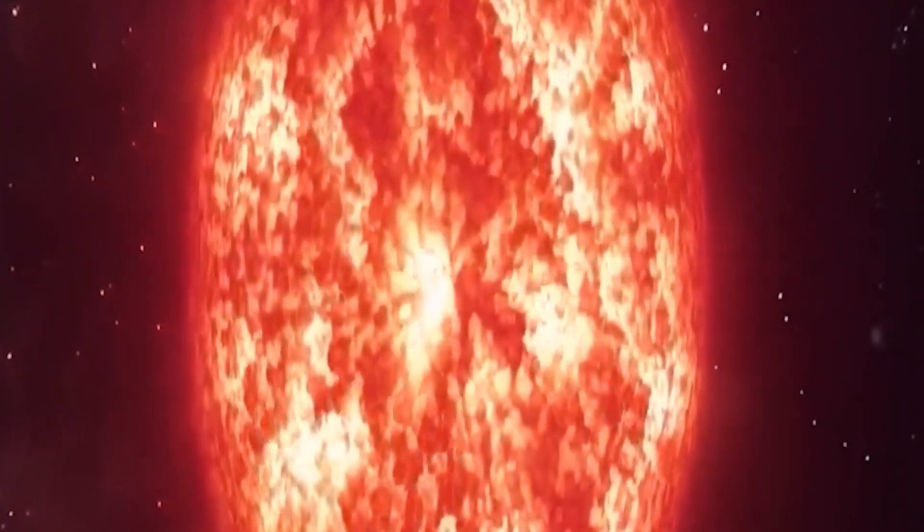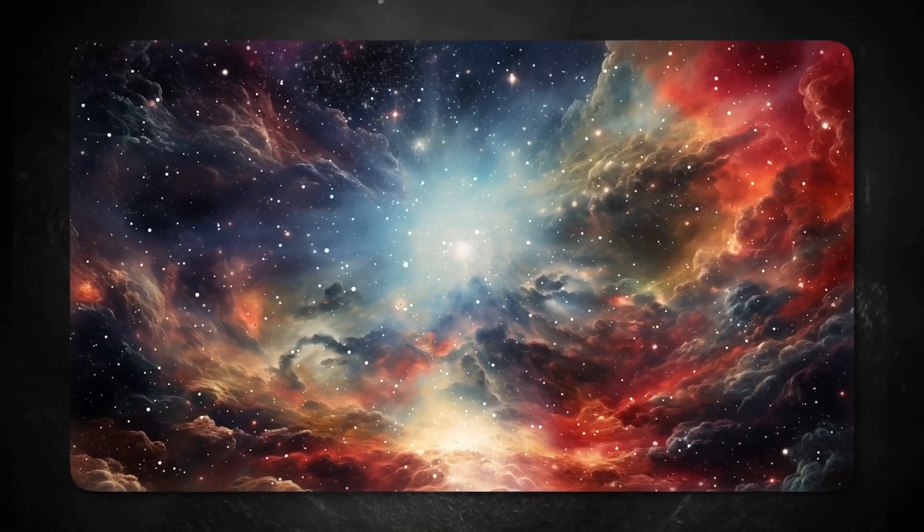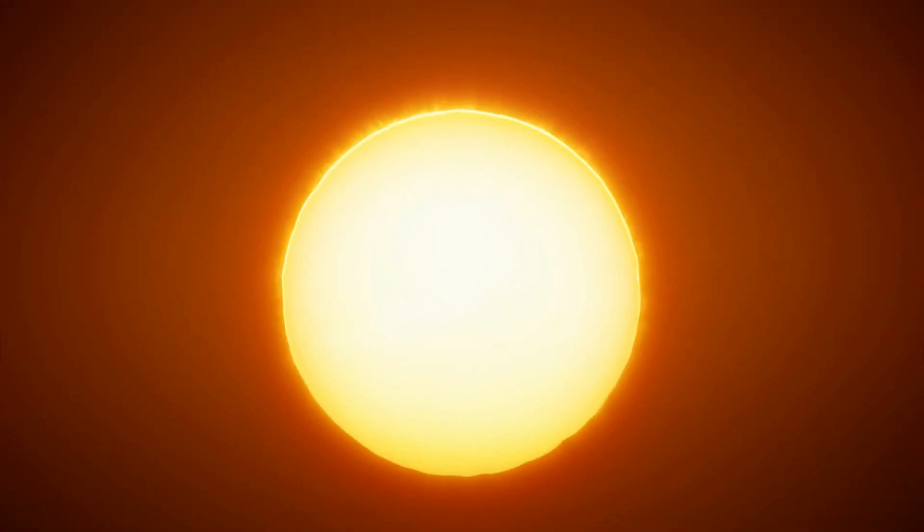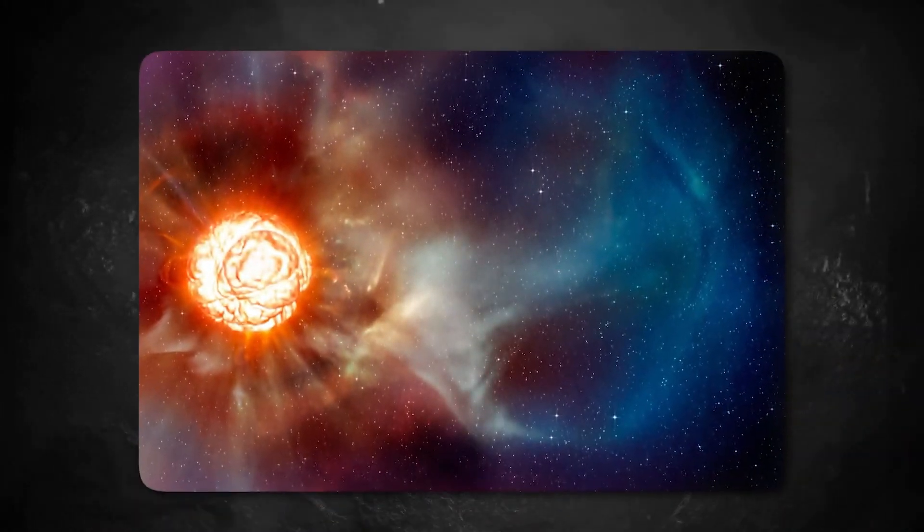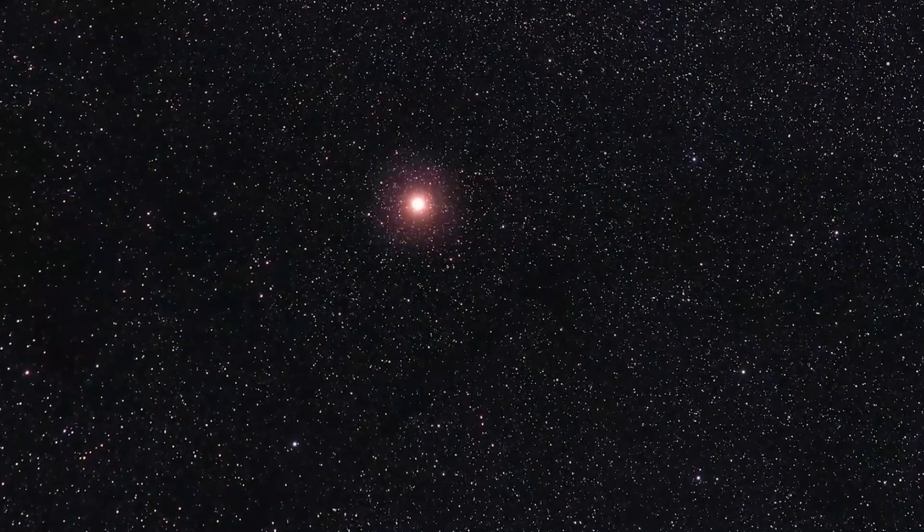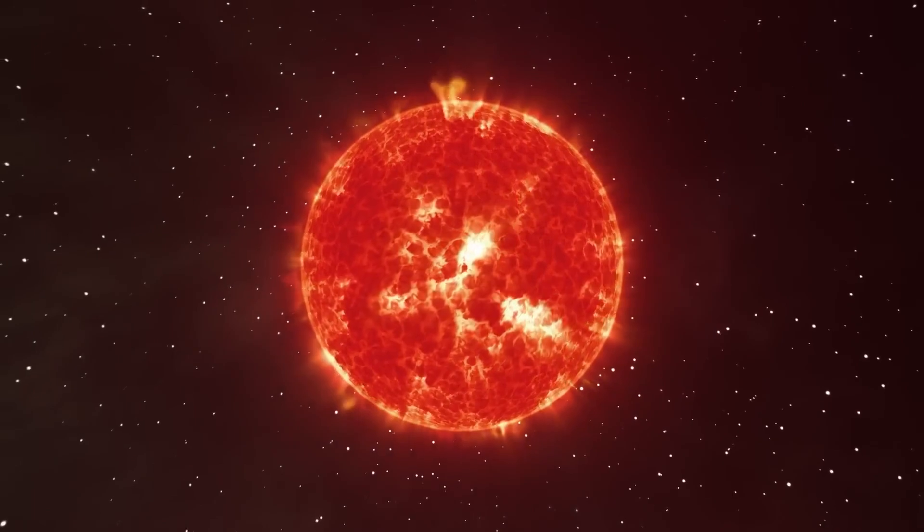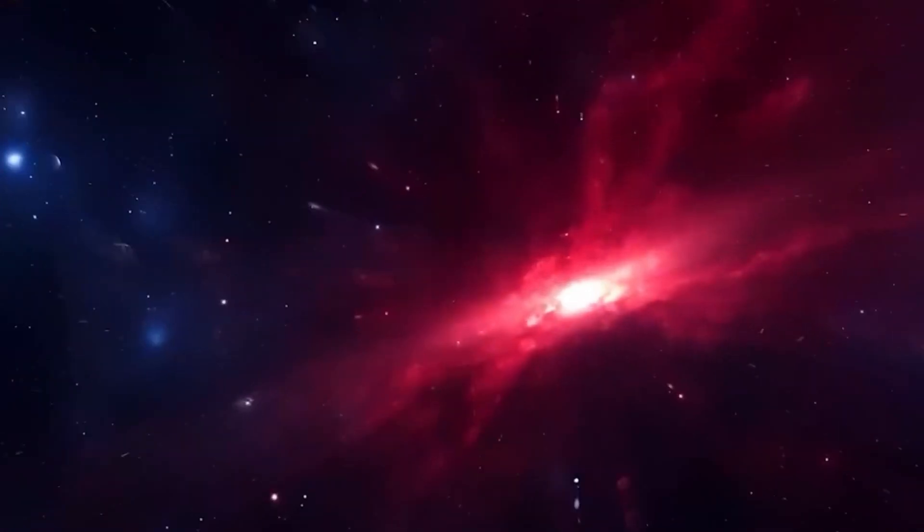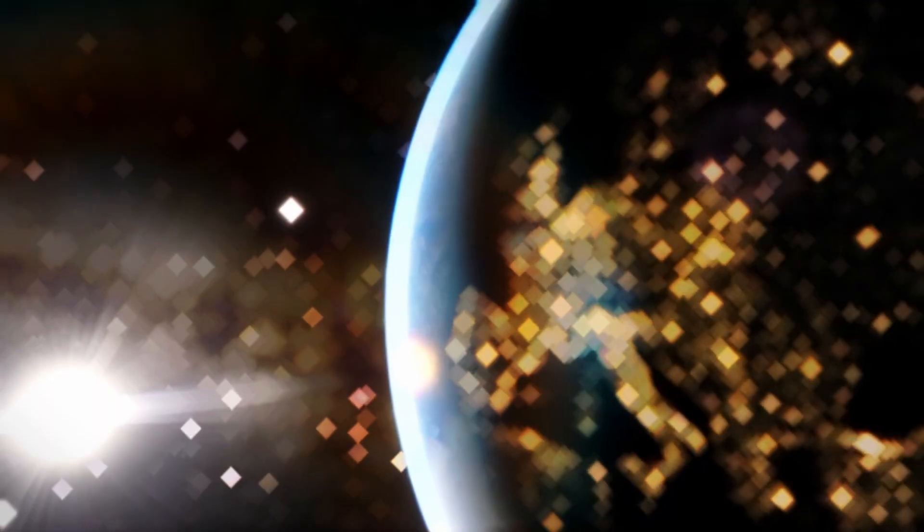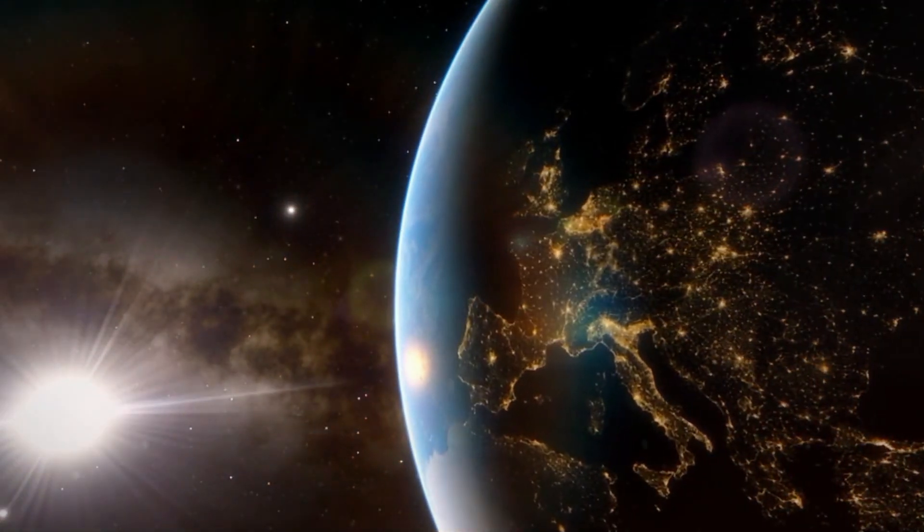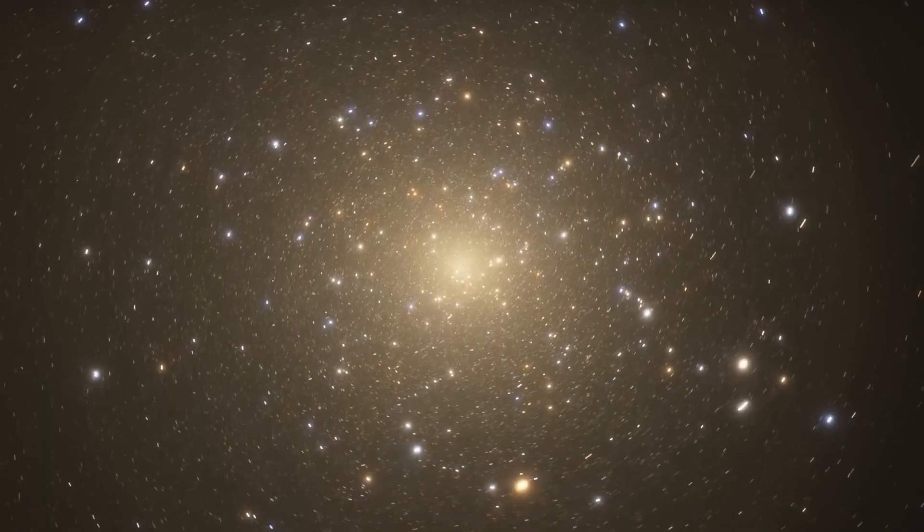Mu Cephei, also known as the Garnet Star, is one of the brightest stars in the sky. Its brightness ranges from 3.4 to 5.1. The mass of these stars varies along with their light. Antares is about 12 times the sun's mass, and Betelgeuse is about 11 times larger. Mu Cephei, on the other hand, is much heavier. Its mass is thought to be almost 20 times that of the sun. Every star has its own unique traits and habits.